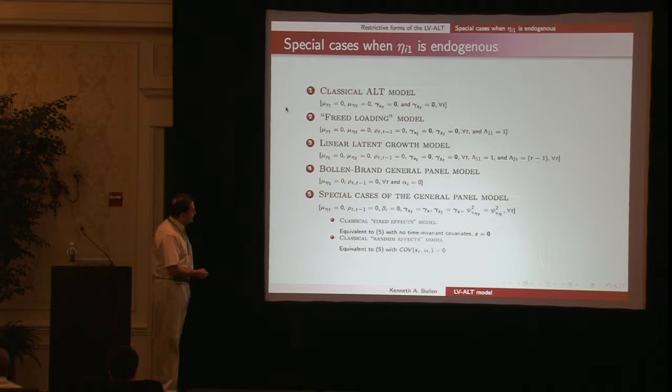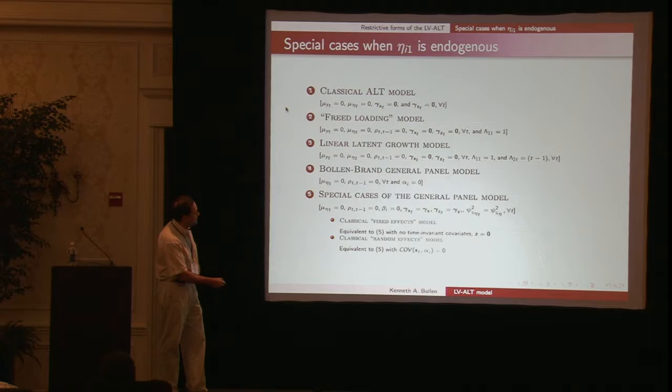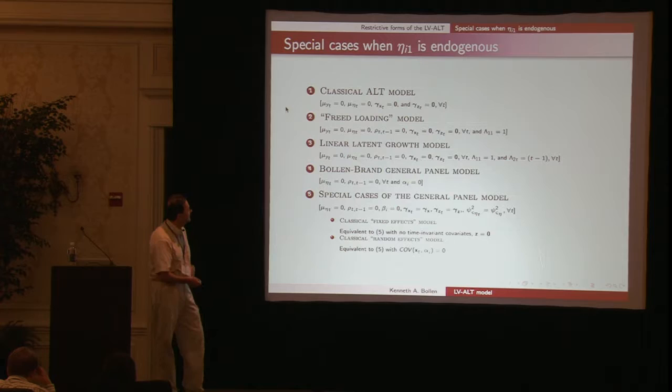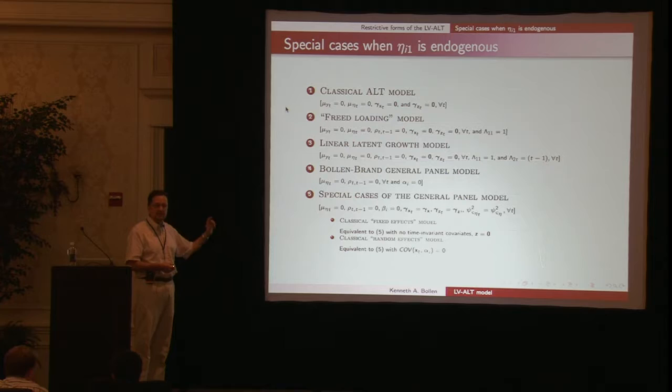There's a general panel model you'll be less familiar with. The classical random effects model used in statistics and econometrics is equivalent to imposing all these restrictions with the additional assumption that covariance of X_t and alpha_i is zero. The fixed effect model is equivalent to the general model with these restrictions, assuming no time-invariant Z variable because that leads to under-identification. This is a sample of models used frequently that can be seen as restricted nested cases of the general model. You can test if models like growth curve fit as well or better than the more general latent variable ALT model.